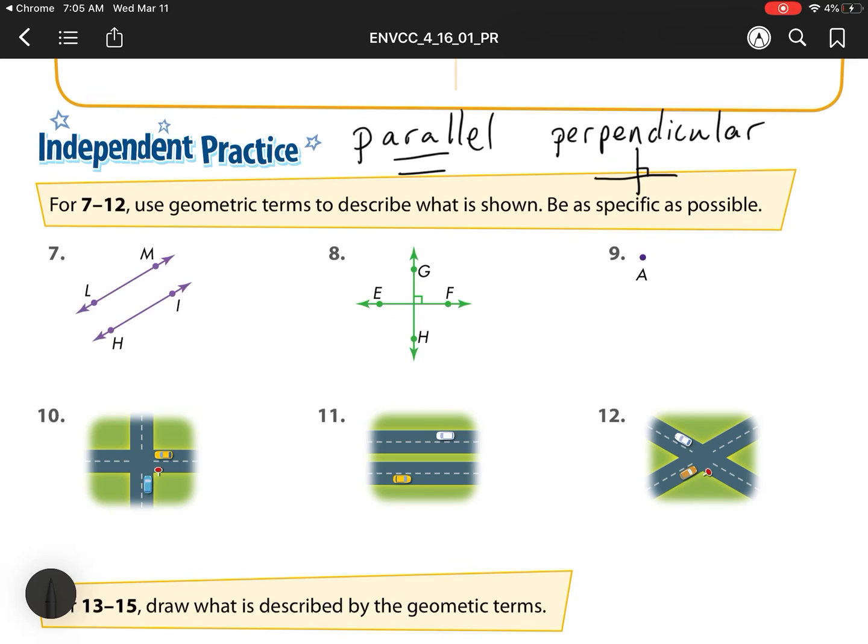We also have a point, which was from our previous lesson, which is just one spot, one location. We also have intersecting, which are when two lines cross, but they're not at right angles.